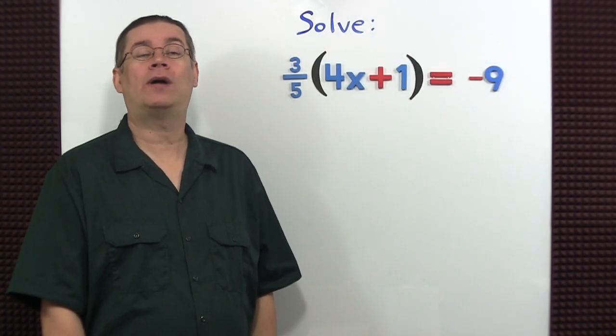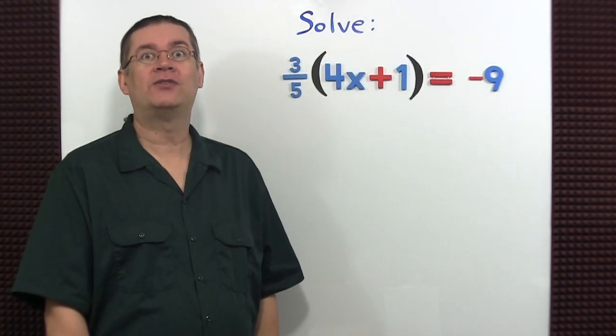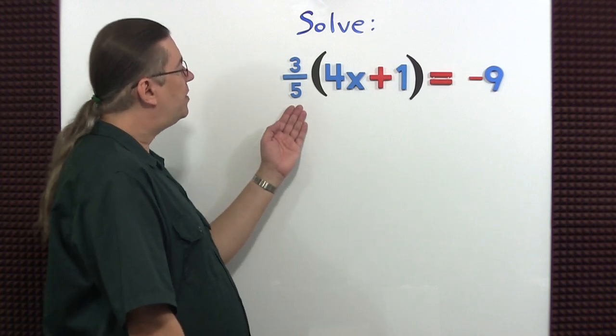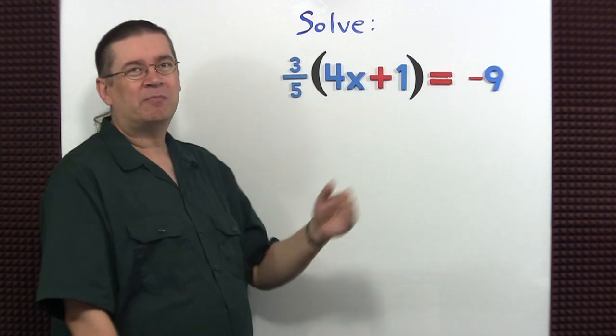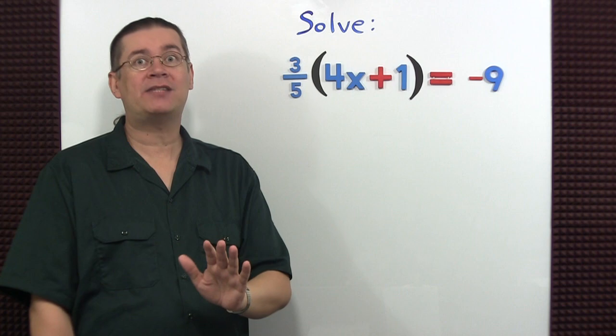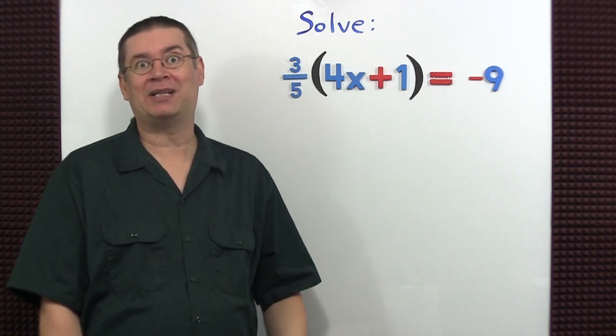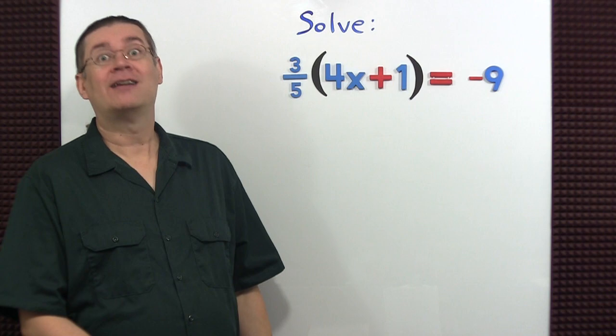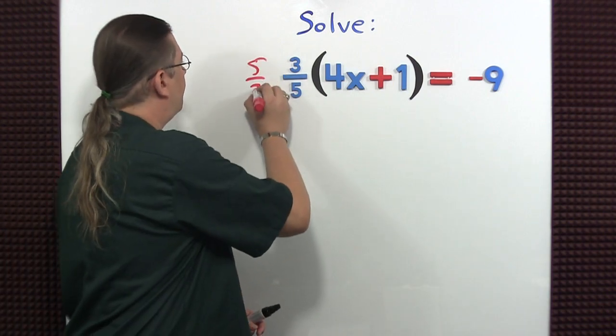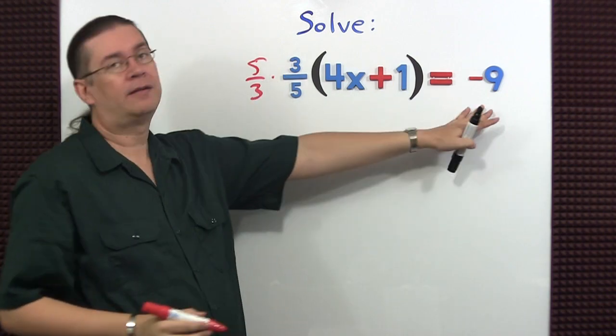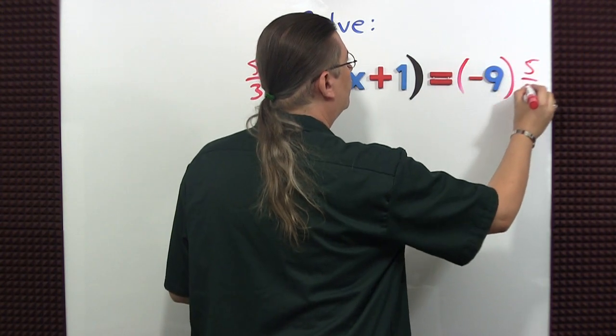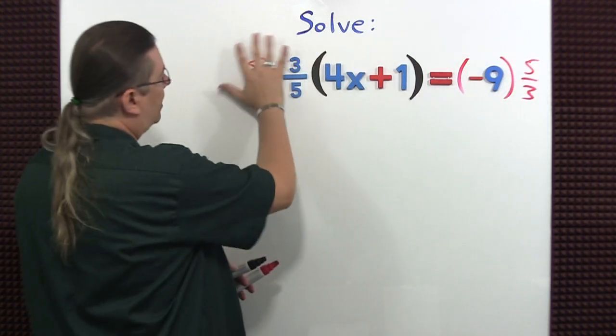For a last example, I want to multiply by a reciprocal to solve the equation. Now you could distribute the three-fifths to each of these two terms, but that's more complicated. It's best to just wipe it out by multiplying by its reciprocal. What's that going to be? Five-thirds. And what you do to one side, you must do it to the other. Five-thirds.